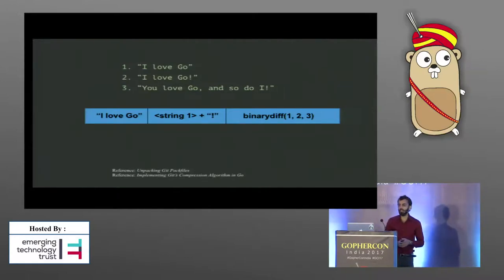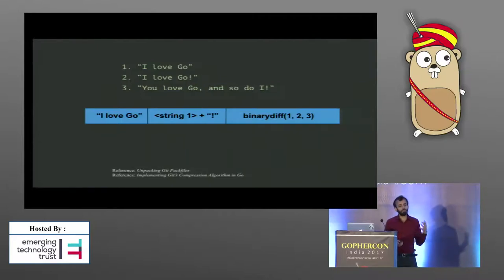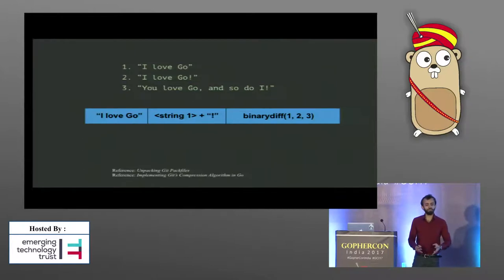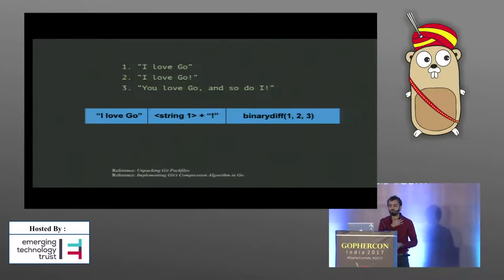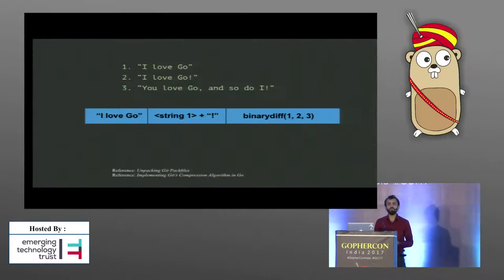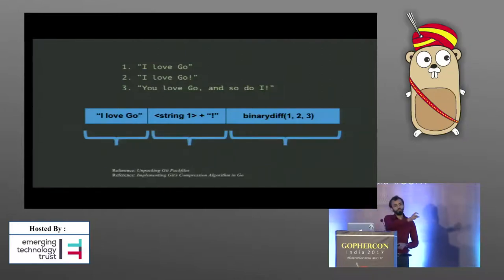Let's say we had three strings and wanted to deduplicate them. We'd store the first one; for the second, we'd note it's the first string but with an exclamation mark added. For the third — 'you love Go and so do I' — it shares components with 'I love Go' but it's not as simple as prefix or suffix matching. We need a binary diffing function that determines the shortest way to relate that third string to the first two. Git has a custom-built algorithm for this, and unlike this simple example, the real pack file algorithm is content agnostic — it doesn't assume plain text. Once we have those relations, we zlib compress each component individually and concatenate them into a pack file.